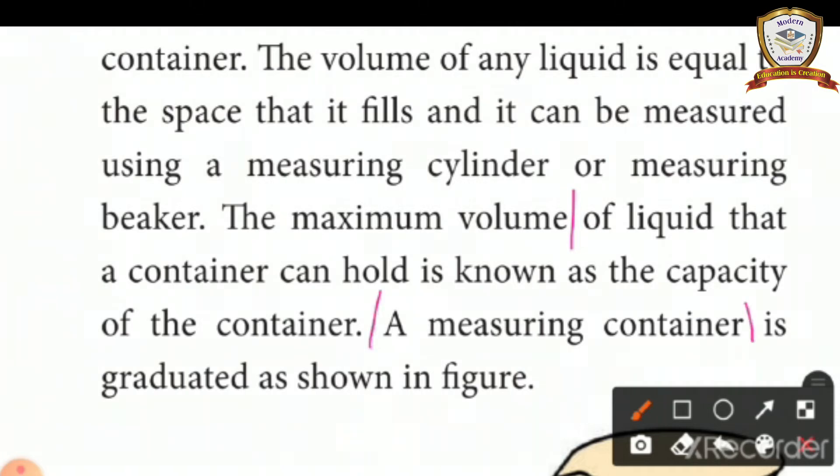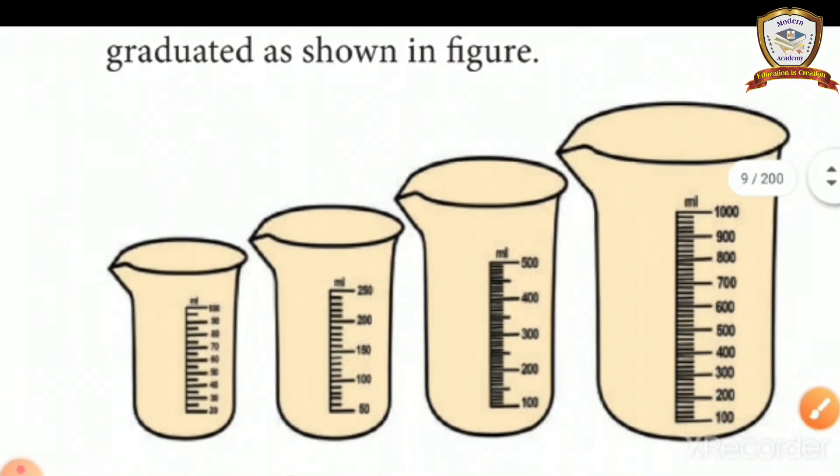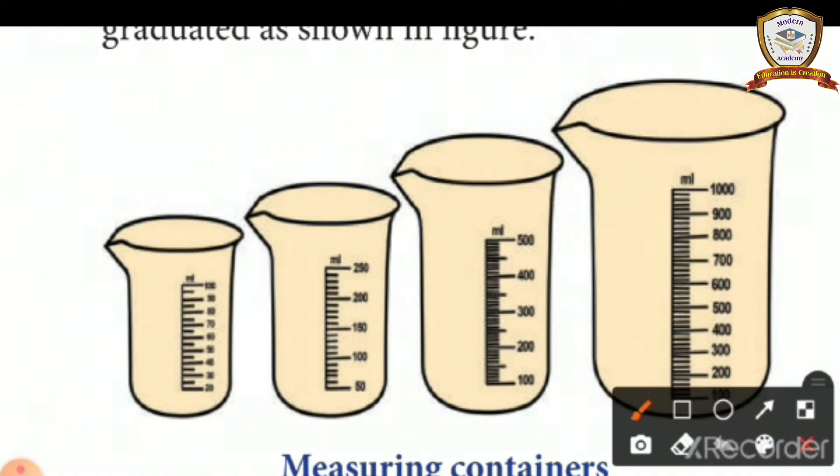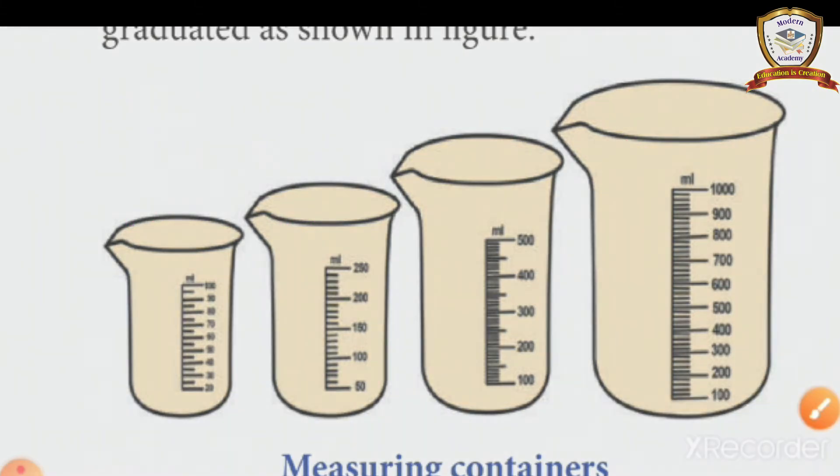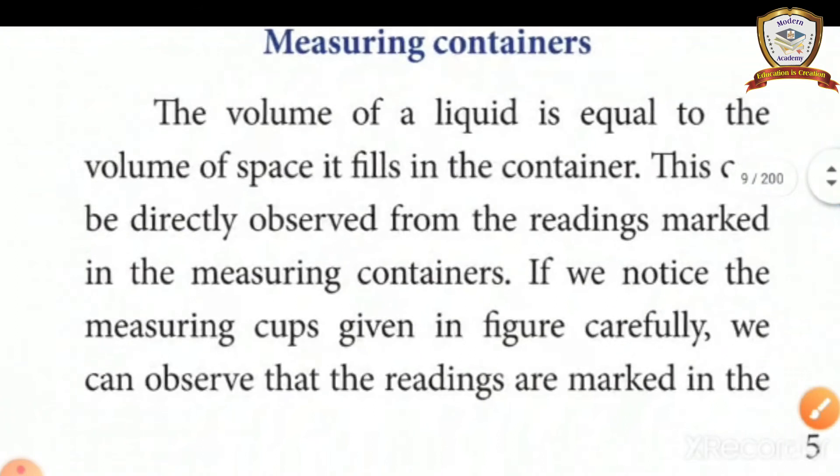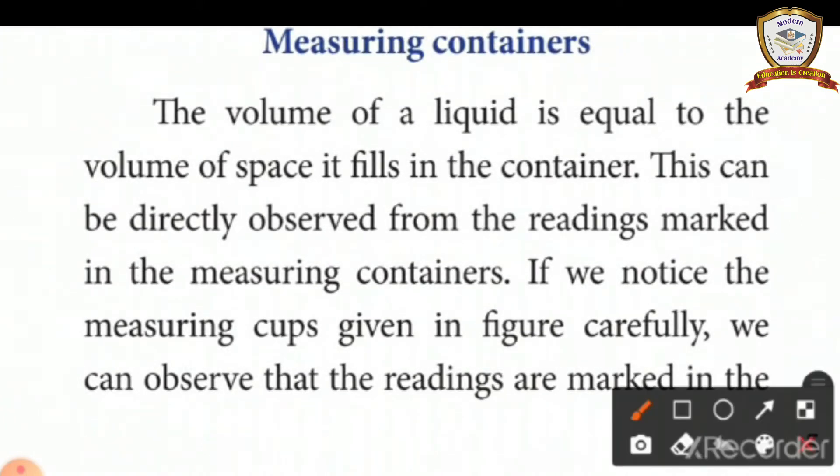A measuring container is graduated as shown in figure. Listen carefully. These are the measuring containers. This is 100 ml measuring cylinder, this is 250 ml, this is 500 ml, and finally 1000 ml which means 1 liter. The volume of a liquid is equal to the volume of space it fills in the container. This can be directly observed from readings marked in the measuring container.